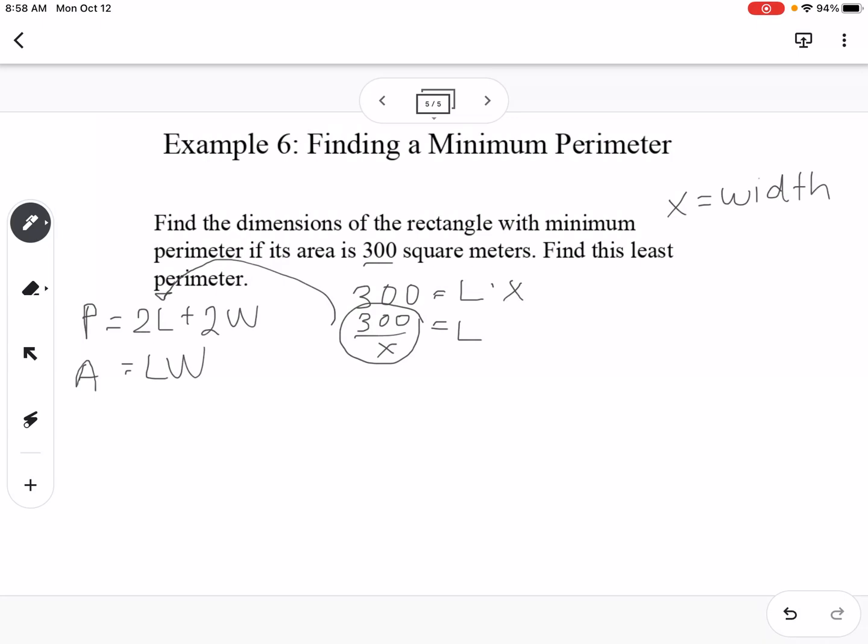So that means for our perimeter, we have 2 times 300 over x plus 2x. So now we can simplify this if we want and write it as 600 over x plus 2x, but now we're going to graph this.